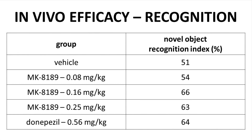Another efficacy study involves looking at how MK8189 can affect cognitive impairment that can be observed in patients undergoing treatment for schizophrenia. The rats in this study were healthy rats. Increasing oral doses of MK8189 were associated with increased object recognition. The highest dose group of 0.25 mg/kg compares favorably with donepezil, which is a positive control group in the study. The selection of donepezil is interesting and we will return to this shortly.